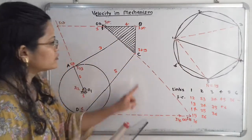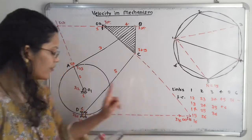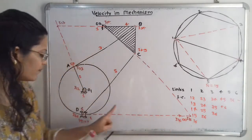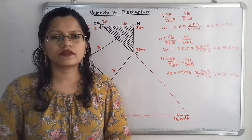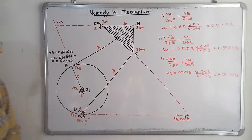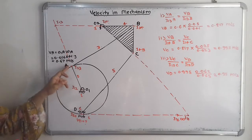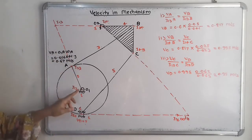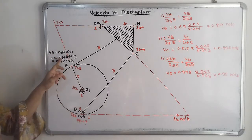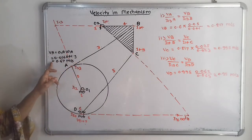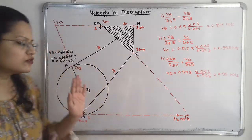I15 is the common center for C and D, so: Vc / (I15 to C) = Vd / (I15 to D). Now for calculations: omega at O1A = 41.9 rad/s (from 400 RPM), and distance O1A = 16 mm = 0.016 m. So Va = 0.016 × 41.9 ≈ 0.67 m/s.